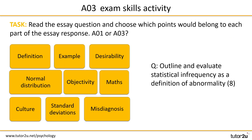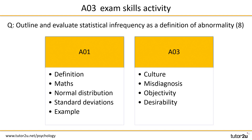Another task for you now — read the essay question and choose which points would belong to each part of the essay response. Of the 9 terms highlighted in gold, some belong to the AO1 part of an essay and some belong to the AO3 evaluation. Pause the video while you read the question and try to identify which belong to AO1 and which belong to AO3. Hopefully you got these right. All of the points in the AO1 box are descriptive information, and the points in the AO3 box are our evaluation, assuming that each of them was developed with one of our writing frames — the double whopper burger, for example.